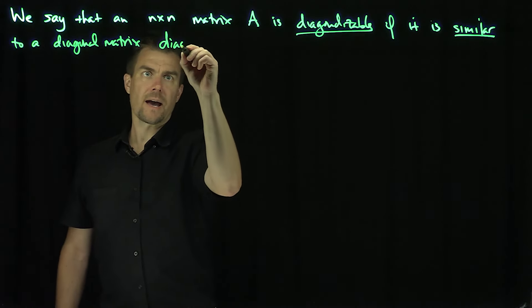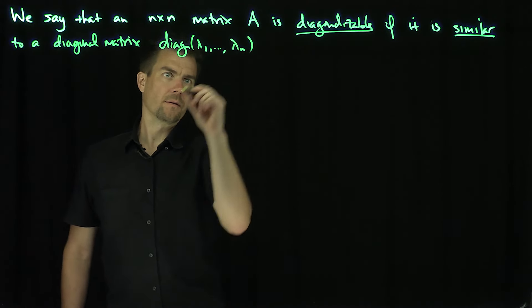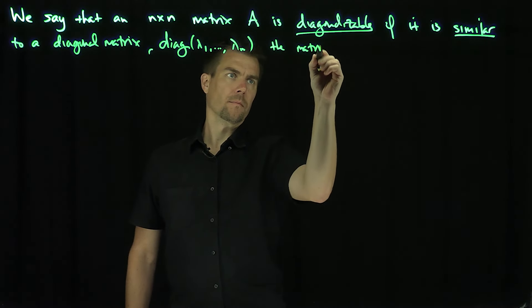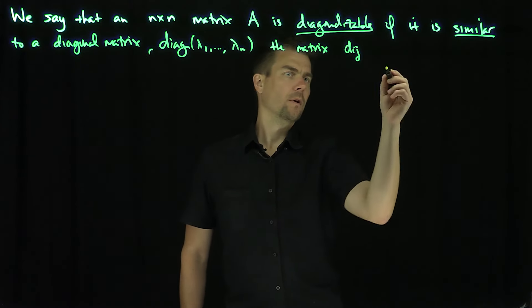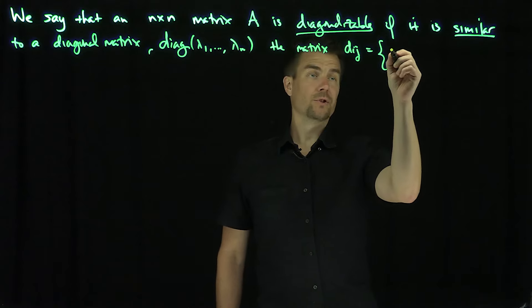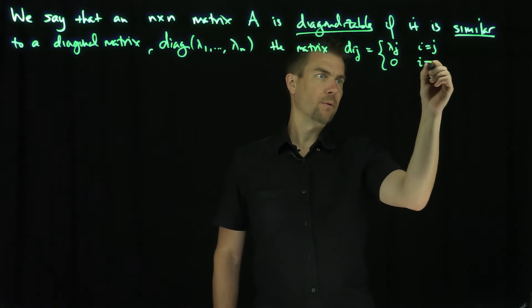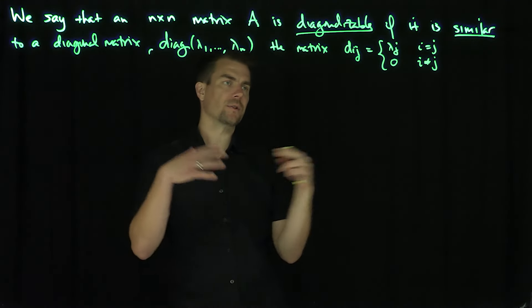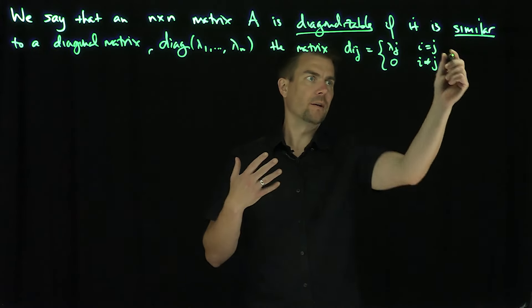And I'll write diag(λ₁,...,λₙ) to be the matrix dᵢⱼ with entries λⱼ if i equals j and 0 if i is not equal to j. In other words, on the main diagonal, when i and j are the same, you just get the λᵢ value on that diagonal entry. That's what a diagonal matrix is.